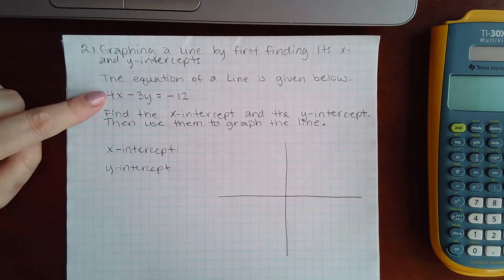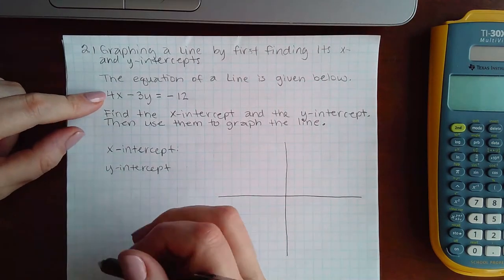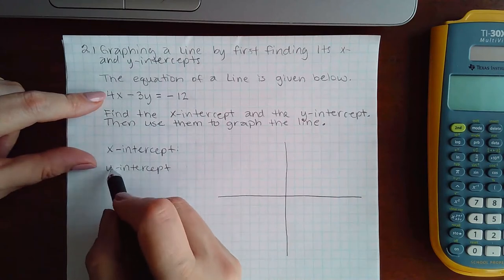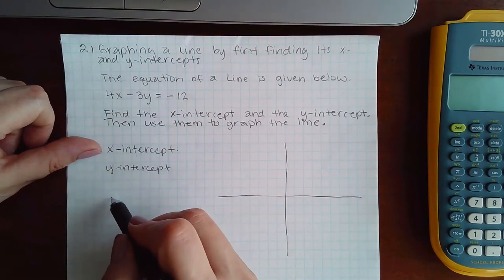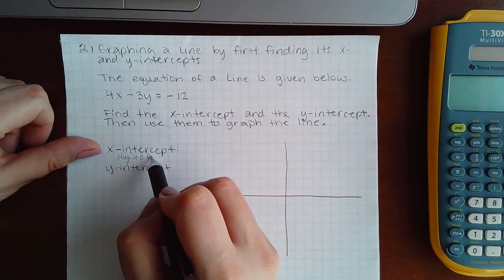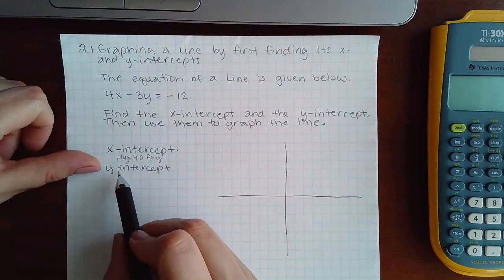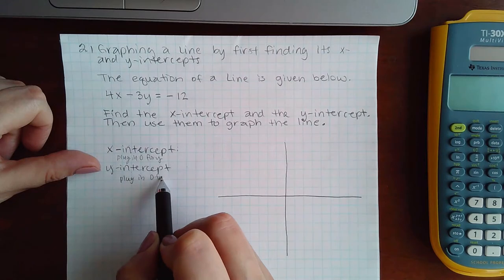So here we have this. If I want to find the y-intercept, or we could do the x-intercept first. If we want to do the x-intercept, that means we have to plug in zero for y. And if we want the y-intercept, we have to plug in zero for x.